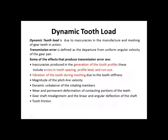Next, we will cover the design procedure for spur gears. In case of dynamic tooth load, this load is due to inaccuracies in manufacturing. In industries, the main important point is the tooth profile. This includes errors in tooth spacing, profile, lead, etc. Due to these inaccuracies during manufacturing, when the gears are in meshing position and coming into contact or departing, there will be some dynamic load acting on the gears and pinion.